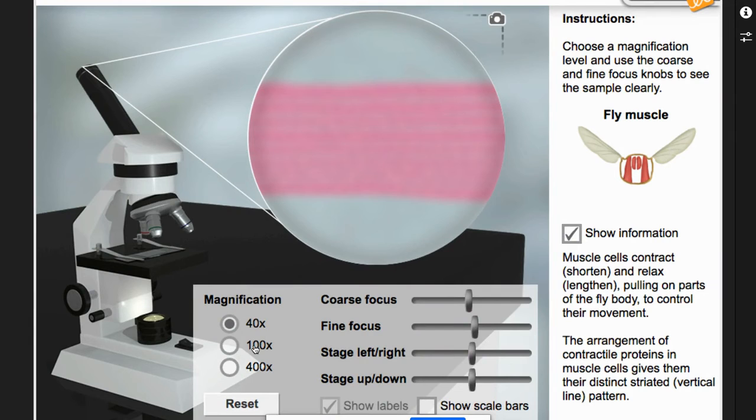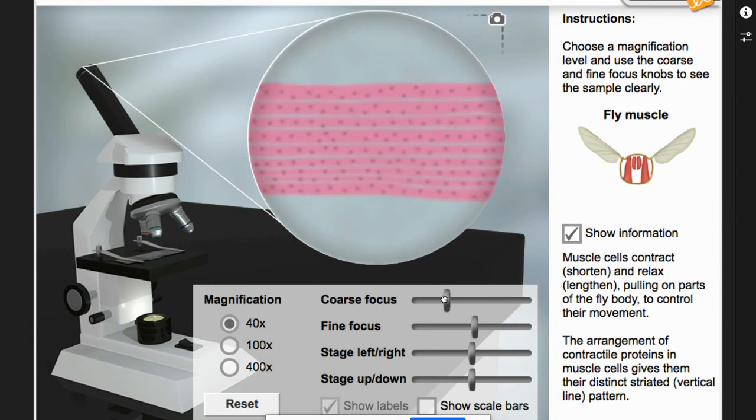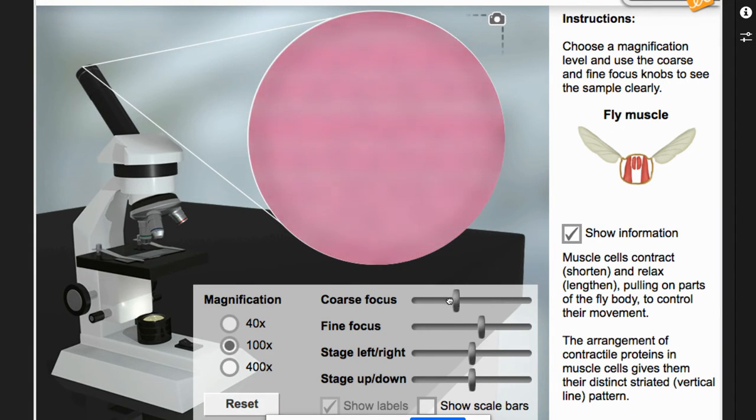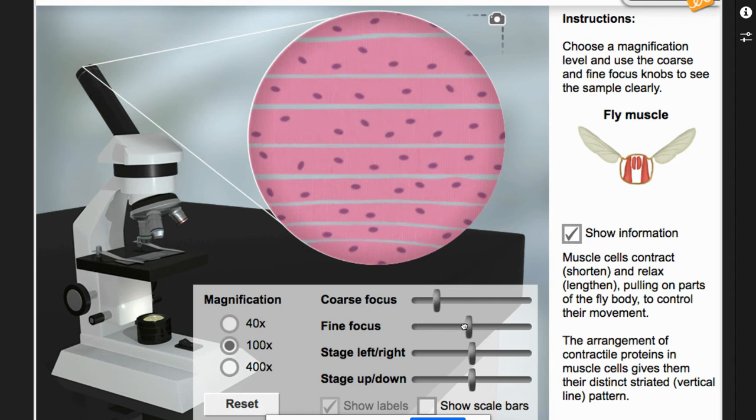Same thing. As you can see, our magnifications are a little different. Start on the low end. Do your coarse focus first. Then you're going to do the 100x, and then you can do the fine focus. If you want to try the coarse focus, go ahead. But you want to get it as sharp as possible.